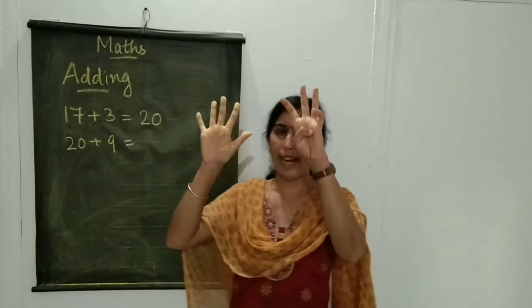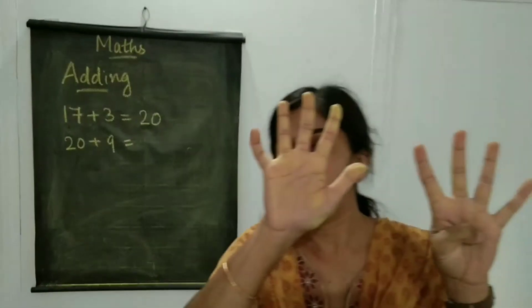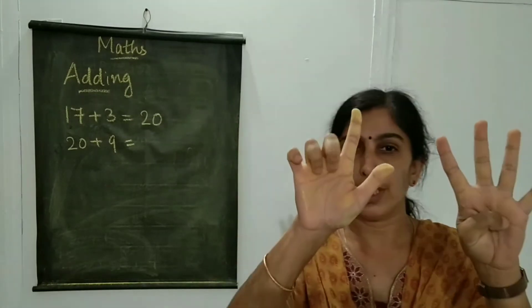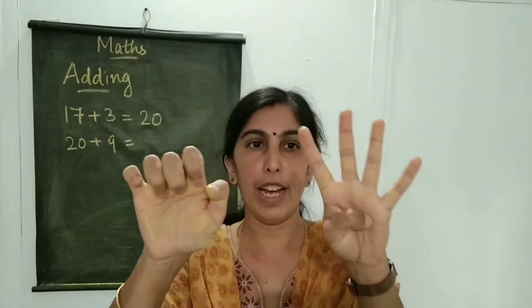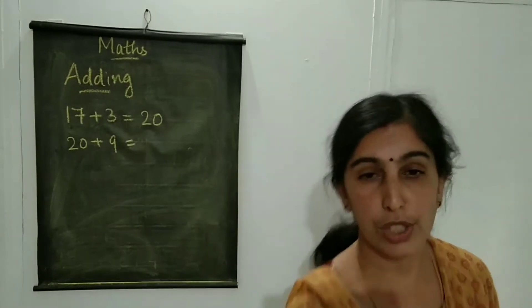5, 6, 7, 8, 9. So count. 20 is already there, keep it there. 21, 22, 23, 24, 25, 26, 27, 28, 29. So, 20 plus 9 is 29.